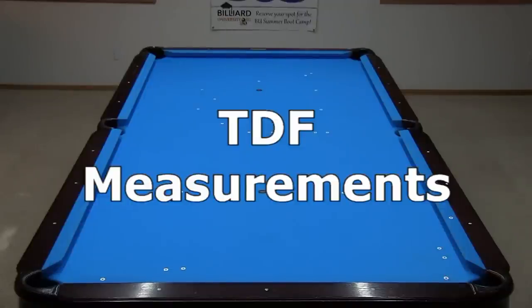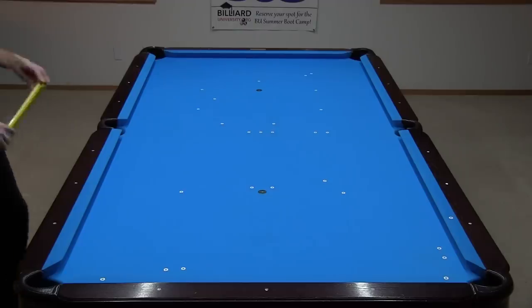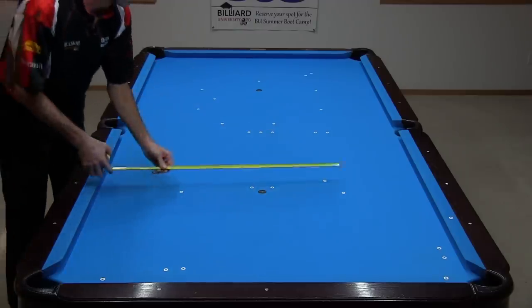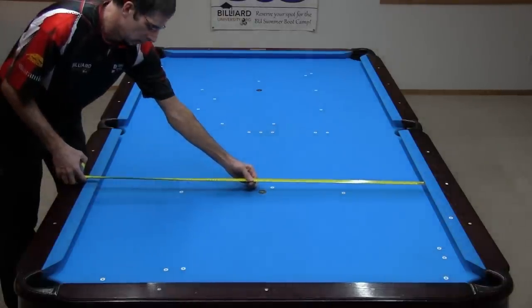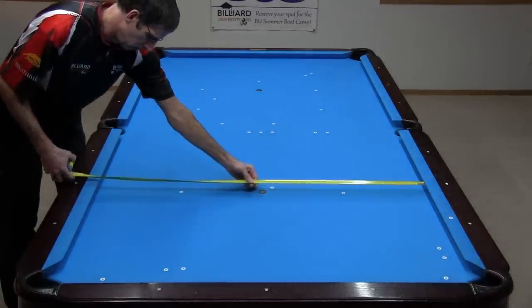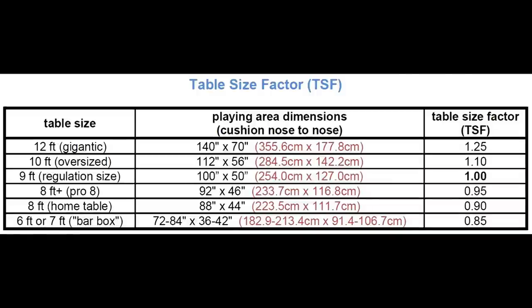To determine a table's TDF, you just need to know the table size and take three simple corner pocket measurements. If you don't know the size of your table, you can easily check it by measuring the width from cushion nose to cushion nose. The table size factor table lists all standard values. My table is a 9-foot regulation size with a width of 50 inches.